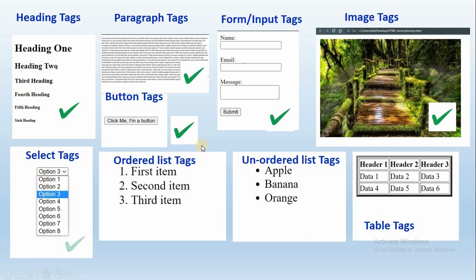There are options for lists. The ordered list is how we display content in a serial order. The unordered list is how we use bullet points.